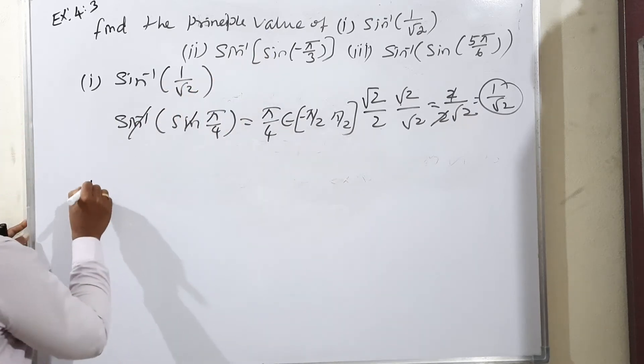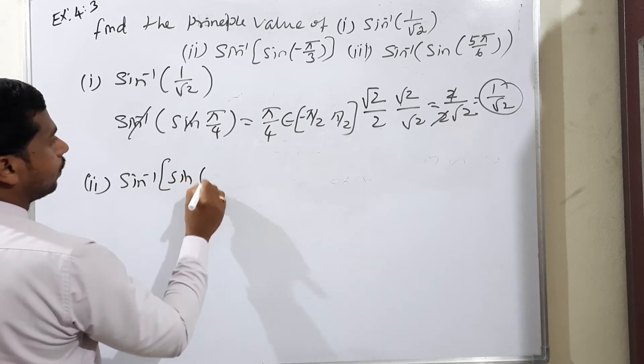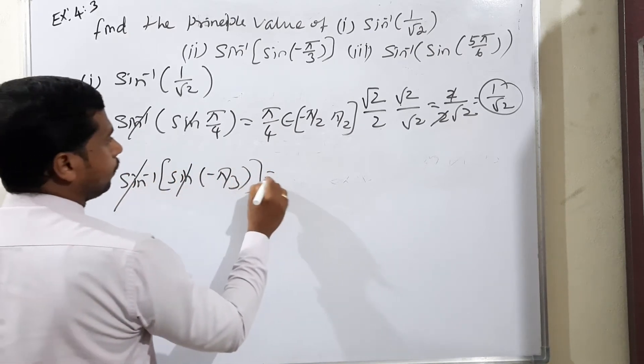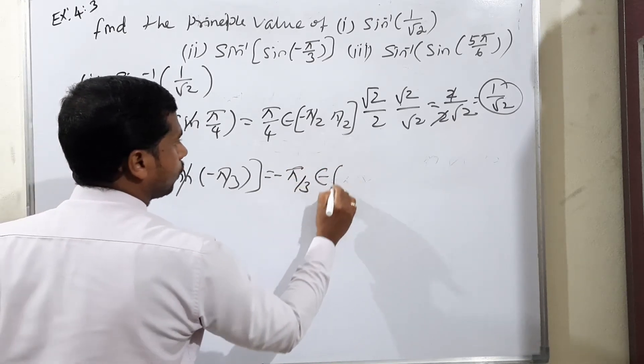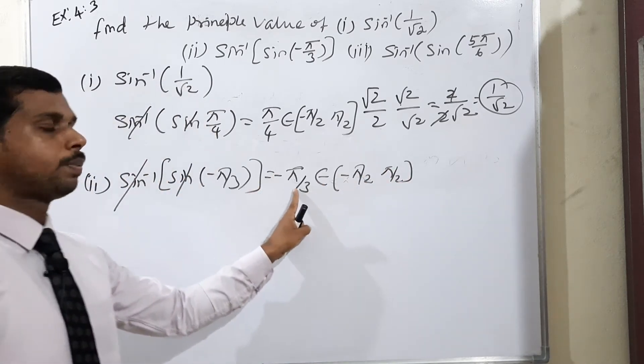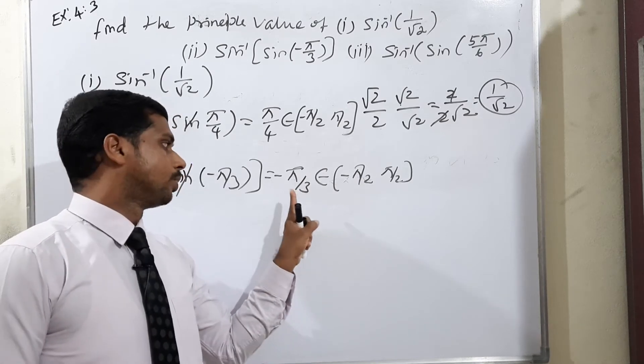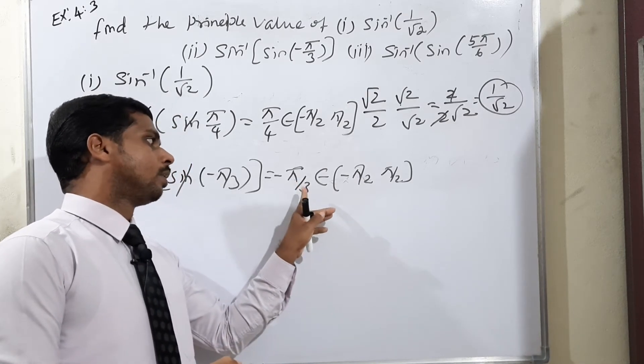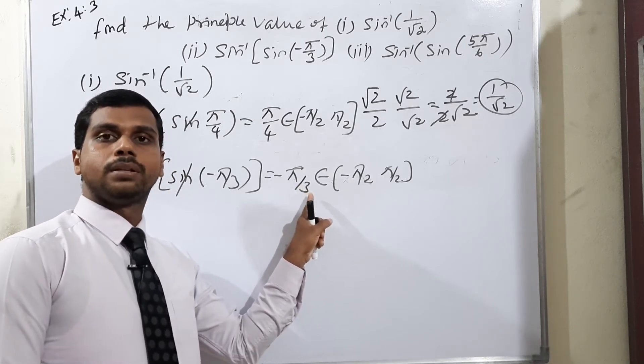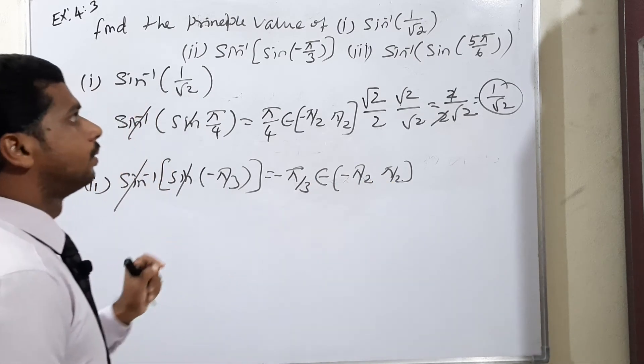Moving to second one, very simple. Sin inverse sin of minus π/3. Definitely sin inverse sin cancel means -π/3. It belongs to -π/2 to +π/2. -π/3, what value? 180 means 60. So 60 means 180 divided by 3, π/3, 60. 60 definitely is in the interval. So -π/3 is the answer.